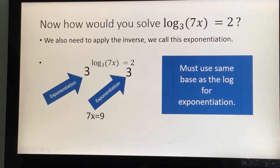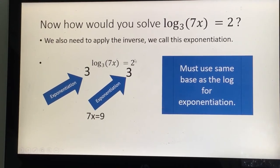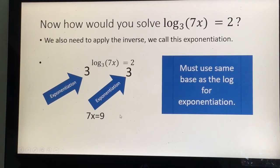And so this goes to 7x equals 9 because 3 squared is 9. All right. And now it's just one more step. x equals 9/7.